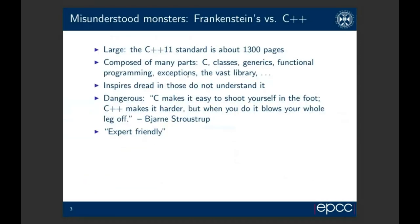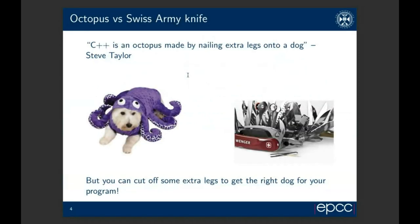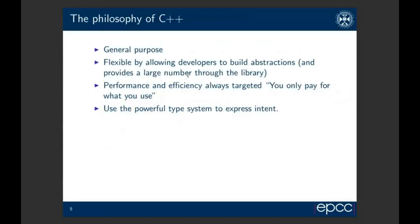There's a bit of truth in all of these things. A more amusing quote is that C++ is like an octopus made by nailing legs onto a dog. But the thing is, you don't have to use every feature of the language in every program — you can cut off a few of those extra legs. The philosophy of the language is that it's a general-purpose thing, very flexible, allowing you the developer to build your own abstractions, while always targeting good performance and efficiency, which is very important for the HPC numerical computing community.